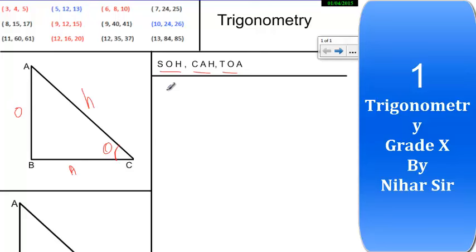Now we have trigonometric ratios. We have to start with sin theta. Sin theta equals to opposite upon hypotenuse.